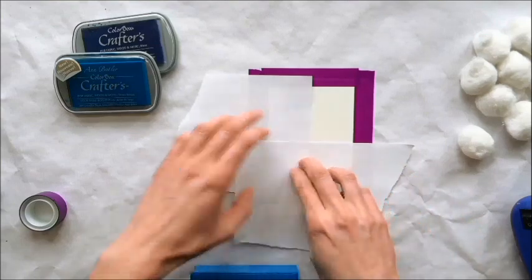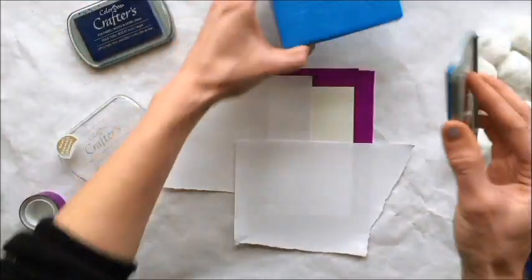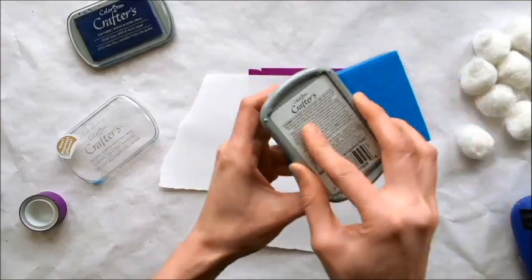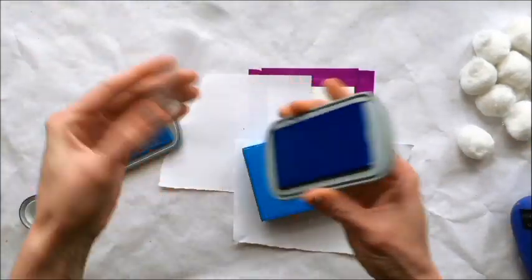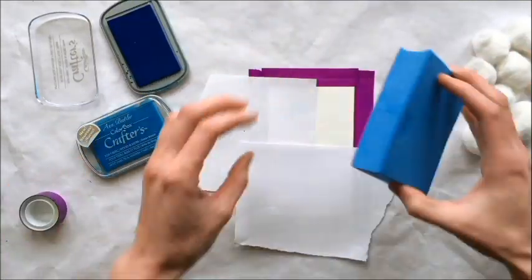So we don't have to worry about inking that up and stamping it right away. I'm just masking off a small area here, and I'm inking up with some of our Crafters inks. Any type of juicier pigment ink I think will work best for stamping with the Magic Stamp.